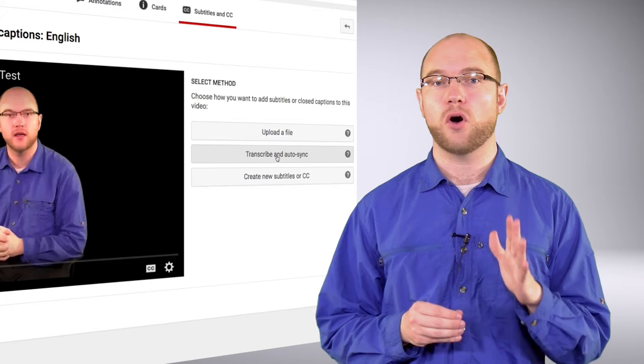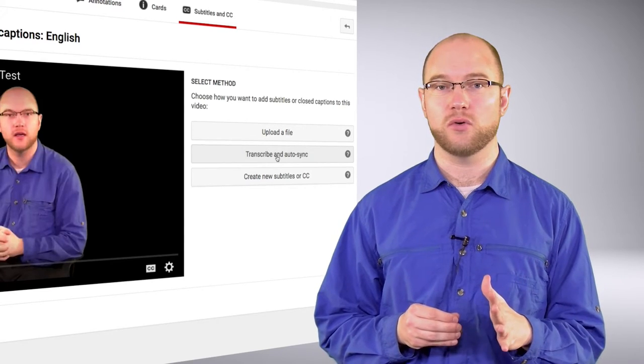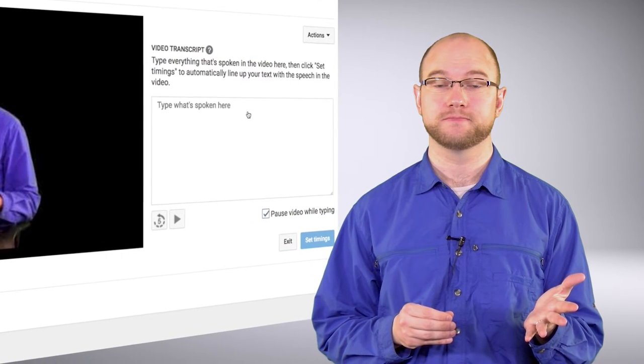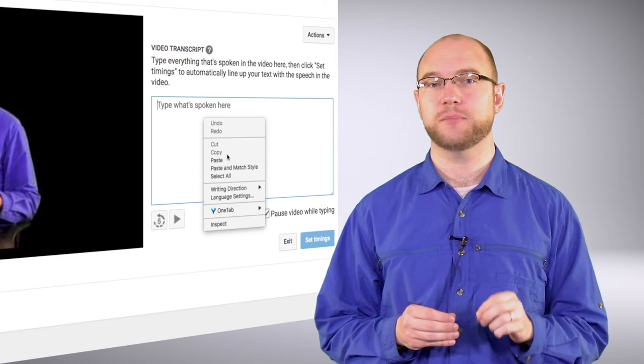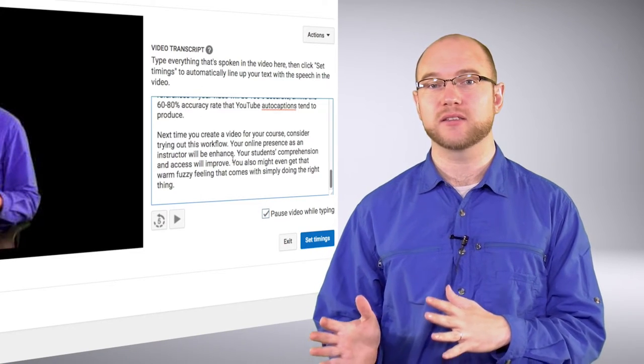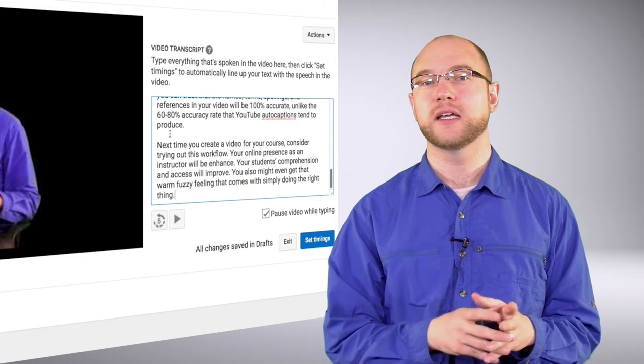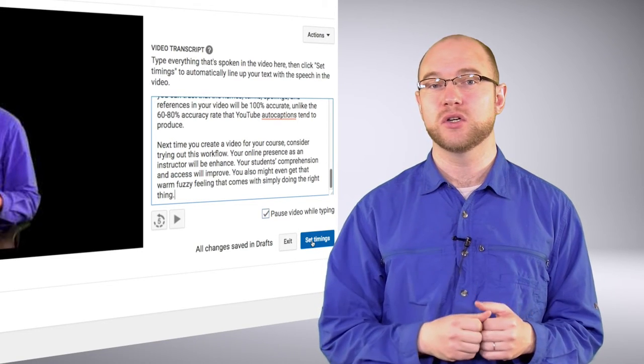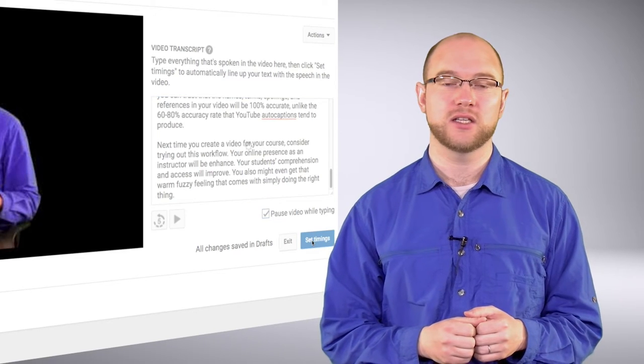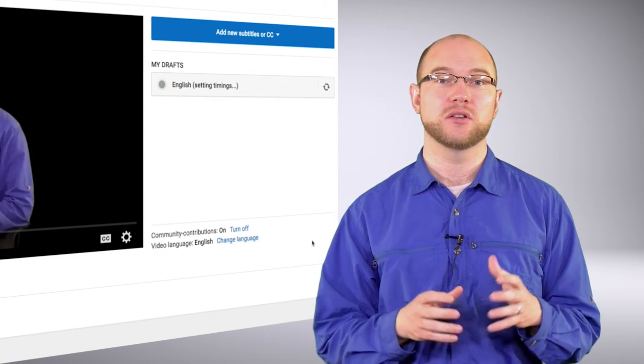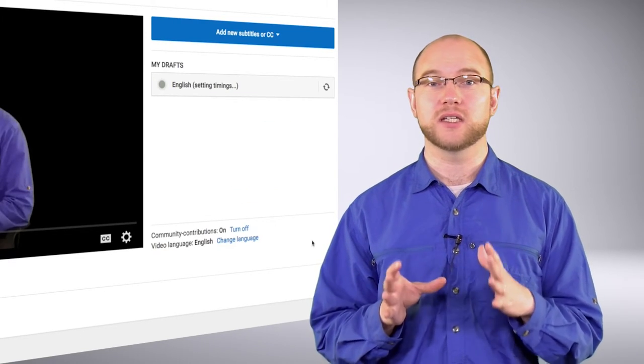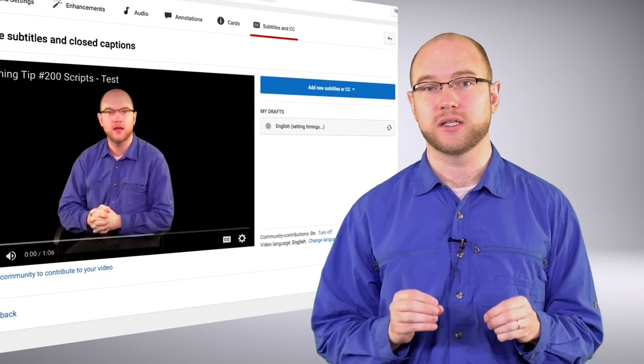Don't worry, you've already transcribed your video when you wrote the script. On the next page, copy the text of your script into the text entry box and click Set Timings. YouTube will automatically sync your accurate script language to the video using its built-in audio recognition capabilities.